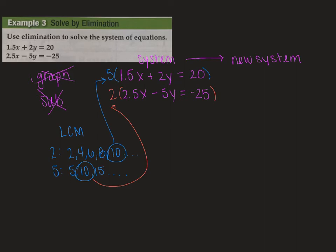So when I'm writing my new system, I'm multiplying. I'm kind of just distributing to each and every term. So I have, let's see, so we have 1.5 times 5. Just double check in there. So yeah, 7.5x plus 10y equals 100.